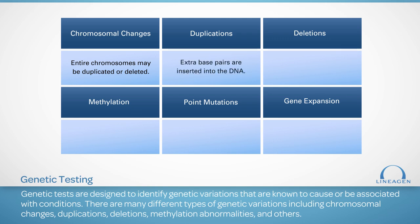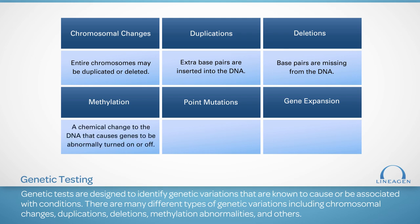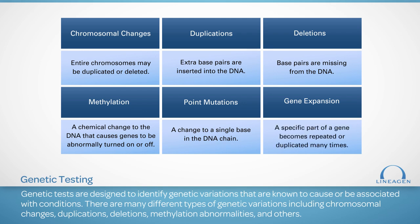Duplications occur when portions of DNA are copied and reinserted into the chromosome. Deletions occur when portions of DNA are missing. Methylation is a normal process that chemically changes the DNA. Errors in methylation may cause genes to be abnormally turned on or off. Point mutations occur when there is a change to a single base pair in the DNA. Gene expansions occur when a specific part of a gene becomes repeated or duplicated many times.